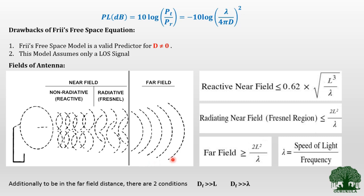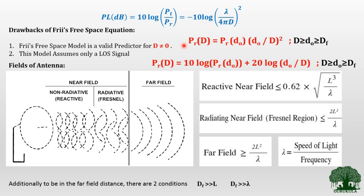The received power can be calculated at a close-in distance D₀. The received power is given by PR(D) = PR(D₀) × (D₀/D)². To represent this in dB scale, taking 10 log of the second term gives: 10 log[PR(D₀)] + 20 log(D₀/D). This is the average received power that can be calculated using the Friis free space equation model, and this addresses the first drawback.